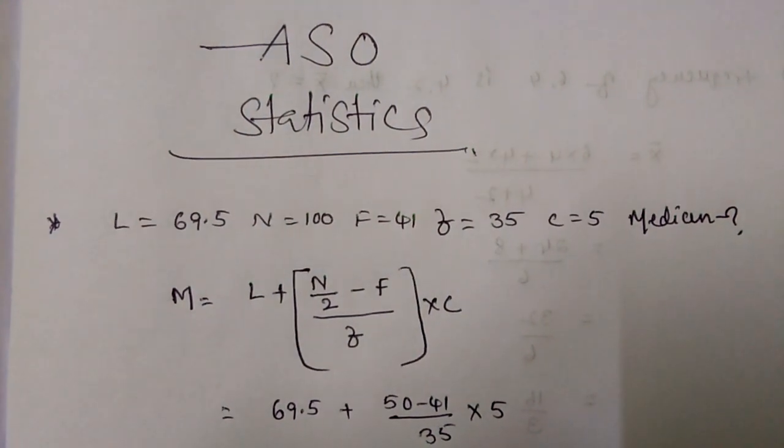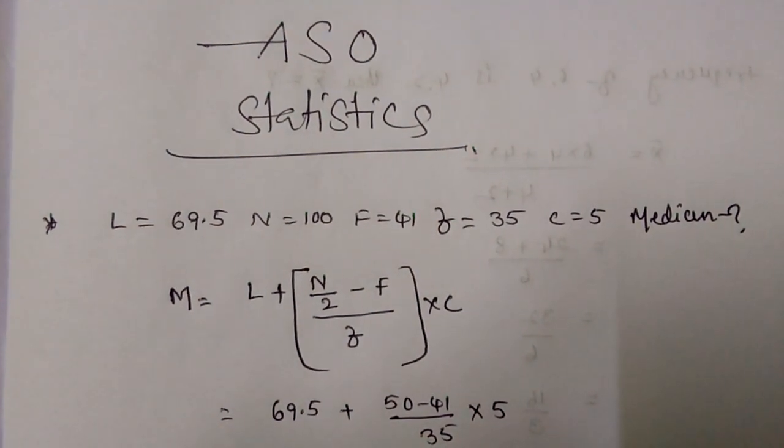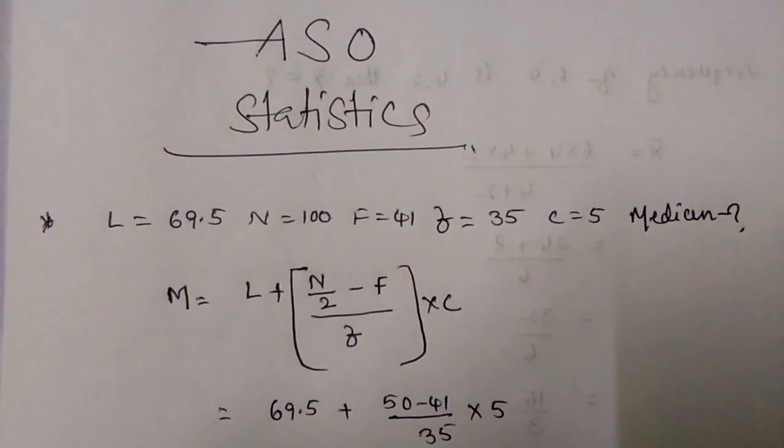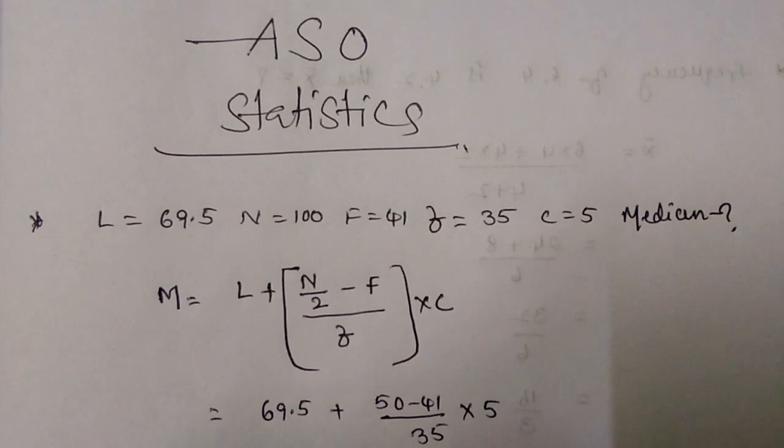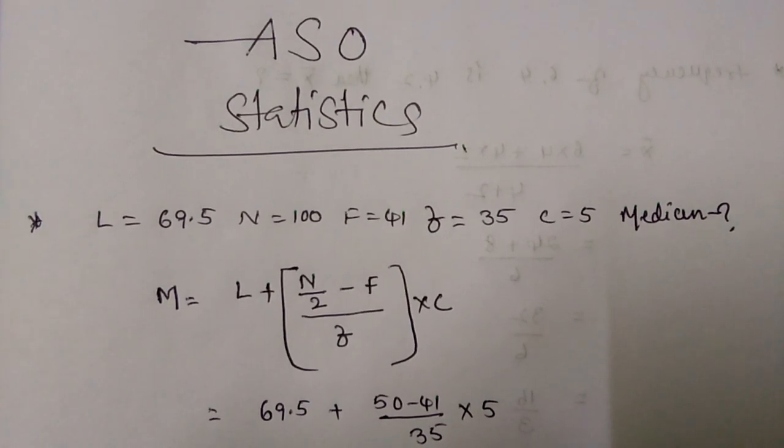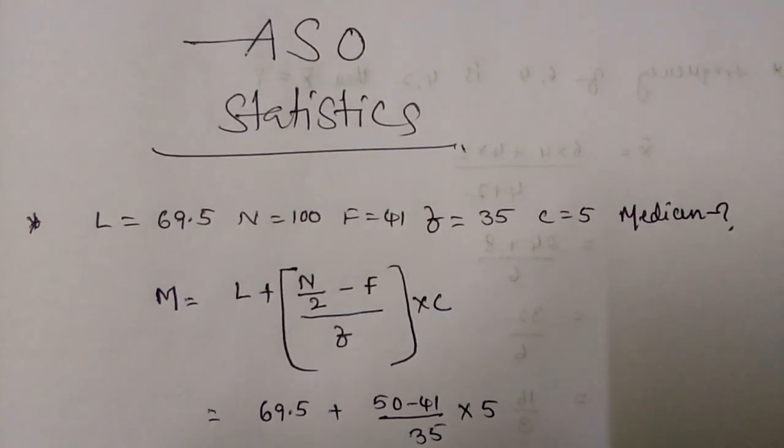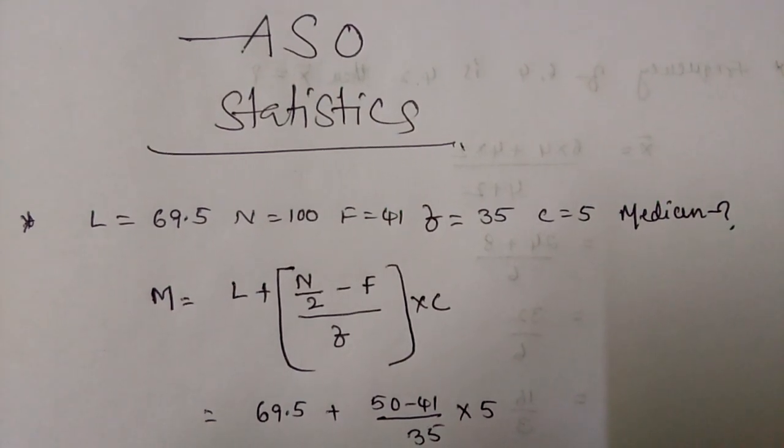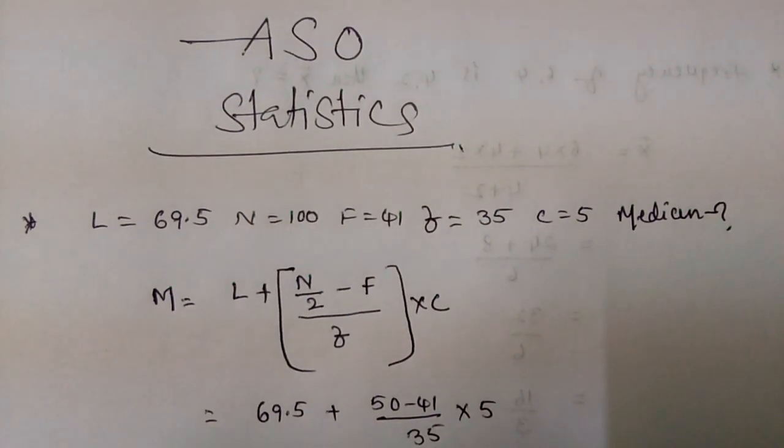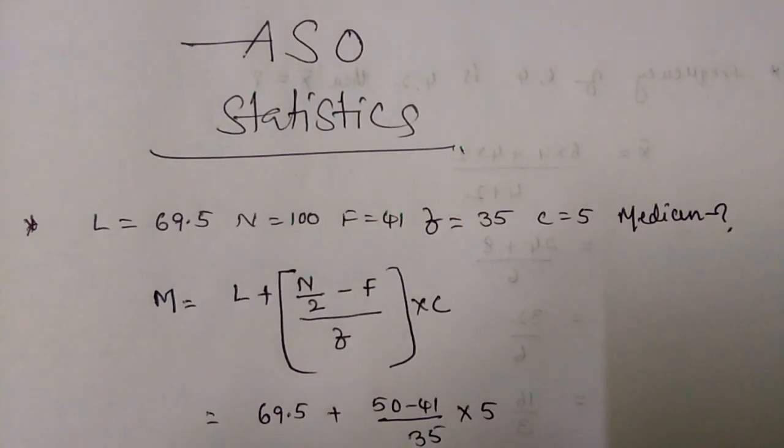Then calculate median. So here L equals the lower class of median, and N equals total particulars, capital F equals above the frequency class, and small f equals frequency.